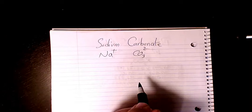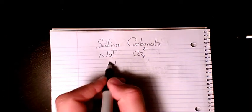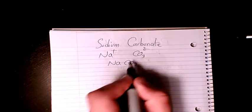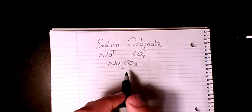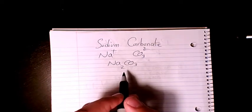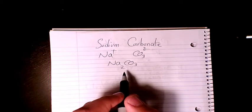So when you combine them it's going to be NaCO3. The two is going to sit here, one is going to sit there, so it's going to be Na2CO3. And then for finding molar mass you have sodium, carbon, and oxygen.